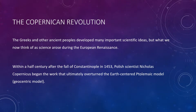Back to the Copernican Revolution. The Greeks and other ancient peoples developed many important scientific ideas, but what we now think of as science arose during the European Renaissance. Within half a century after the fall of Constantinople in 1453, Polish scientist Nicholas Copernicus began the work that ultimately overturned the Earth-centered Ptolemaic model, also known as the geocentric model.